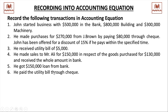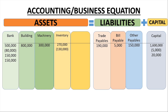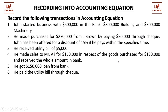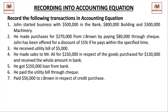Next transaction: the utility bill of $5,000 is paid by check. Bank decreases by $5,000 and the bill payable liability is also decreased by $5,000, since the liability has now been settled.